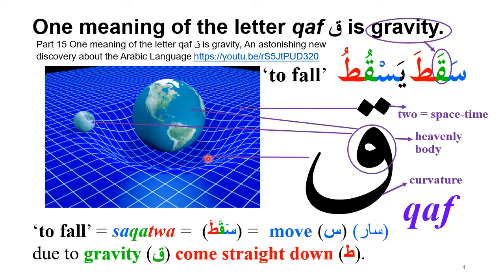The letter Qaf means gravity — please watch part 15 of my series on the new discovery of the Arabic language, linked below. This is very clear from a word like Sakata Yaskutu, which means 'to fall,' because everything falls due to gravity. The letter Qaf is actually a picture of gravity: there is the heavenly body sign, two objects involved in gravity, and the curved shape represents the curvature of spacetime. So Qaf is a picture of gravity.